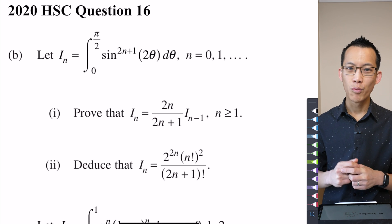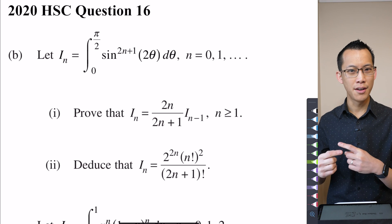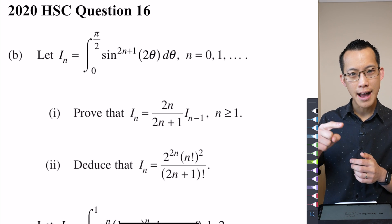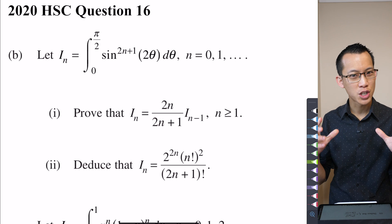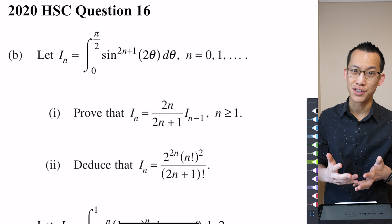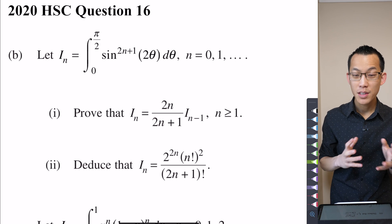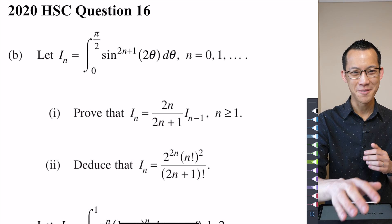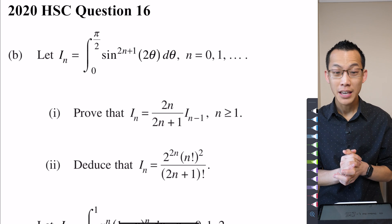and we want to express it as a version of, or a sort of constant multiple of, i_(n-1). Like a smaller version, a sort of stepped down version of the original integral. So this is a recurrence relation. We can do these questions. We know how to handle them, even if it's been a while.